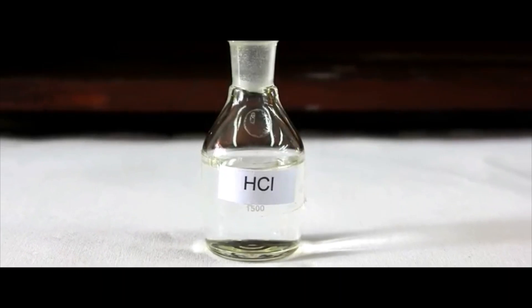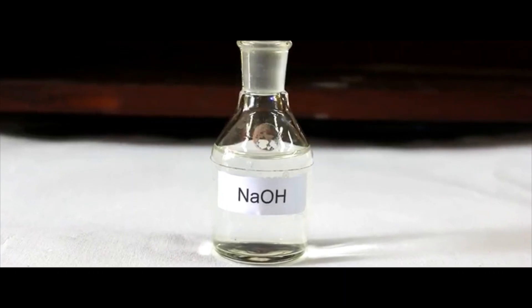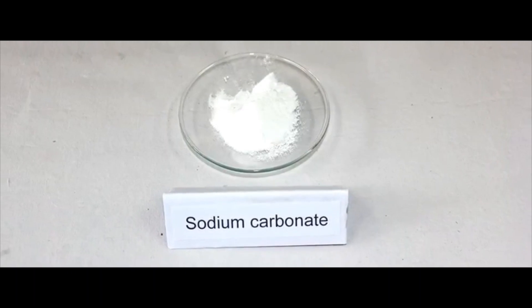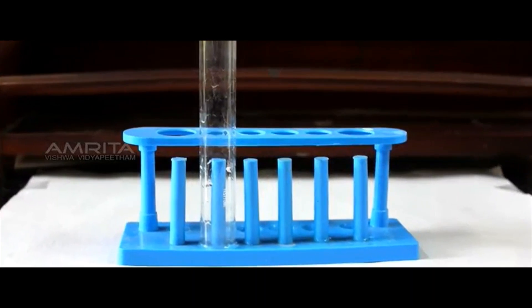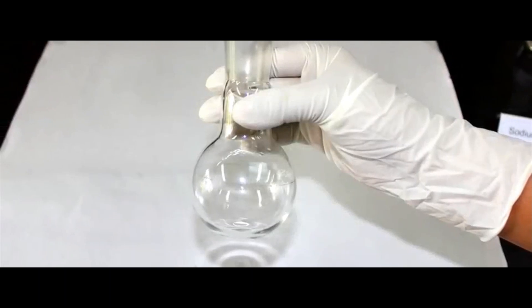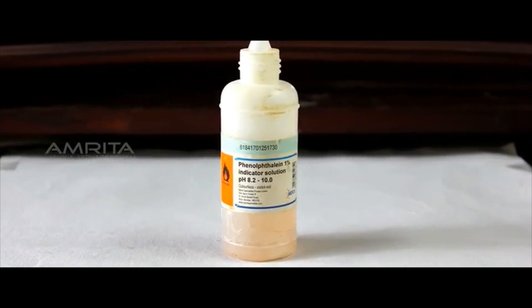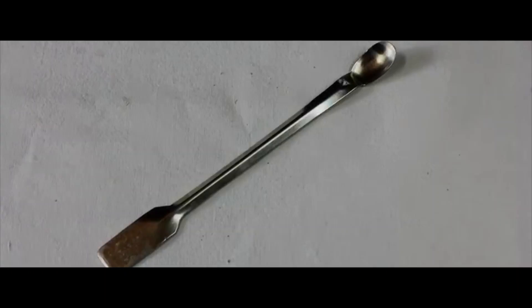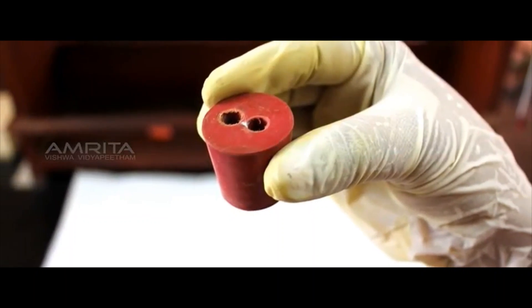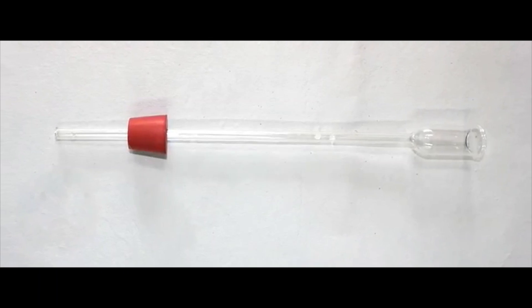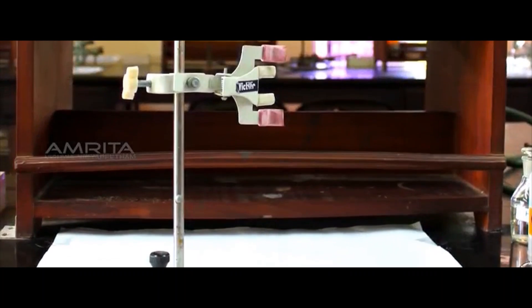Materials required: HCl, NaOH, dropper, test tubes, sodium carbonate, boiling tube, round bottom flask, phenolphthalein, lime water, spatula, double bore cork, bent tube, thistle funnel, and a stand with clamp.